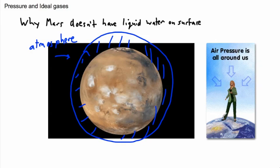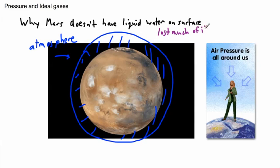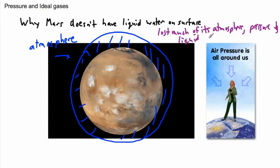With enough pressure, you keep water liquid. In the past, Mars had a thicker atmosphere and was able to push on the liquid enough to keep it liquid. But for reasons we're not entirely sure of, Mars lost a lot of its atmosphere. Because the pressure went down, liquid water was no longer possible — the pressure is too low.